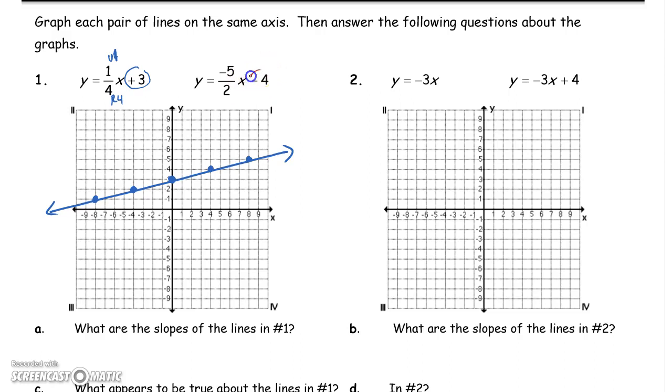The second one is going to start at negative 4, since that's my constant. Negative 5 over 2 as a slope means go down 5, right 2. 1, 2, 3, 4, 5, then 1, 2. No more room.